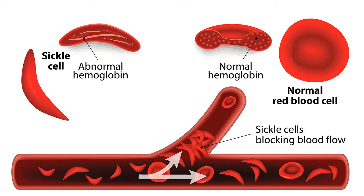Children with sickle cell disease often have immunosuppression, putting them at risk for frequent bacterial infections. Respiratory infections like pneumonia and sepsis are the leading cause of death in young children with sickle cell disease. Caregivers are taught to call for help immediately at any sign of respiratory or skin infection, to get treatment before more cells have sickled.